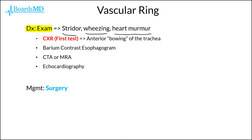Our initial test in these patients should be to get a chest x-ray, which is going to show anterior bowing of the trachea. Additionally, we can also get a barium contrast esophagogram, and because we are evaluating these patients for anomalous arteries, it can also be helpful to get a CTA or an MRA.